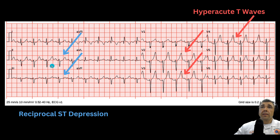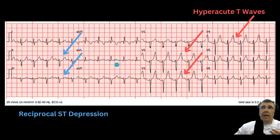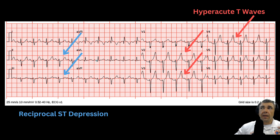The other way to know is if you start to develop reciprocal changes, such as ST depression. The anterior leads truly don't have reciprocal leads on a traditional 12-lead. The reciprocal changes you're seeing over in the inferior leads are likely an early indication of lateral wall extension — just like that 12-lead we were looking at that had an anteroseptal-lateral extension, this one will likely have that as well, and it did with the subsequent 12-lead.